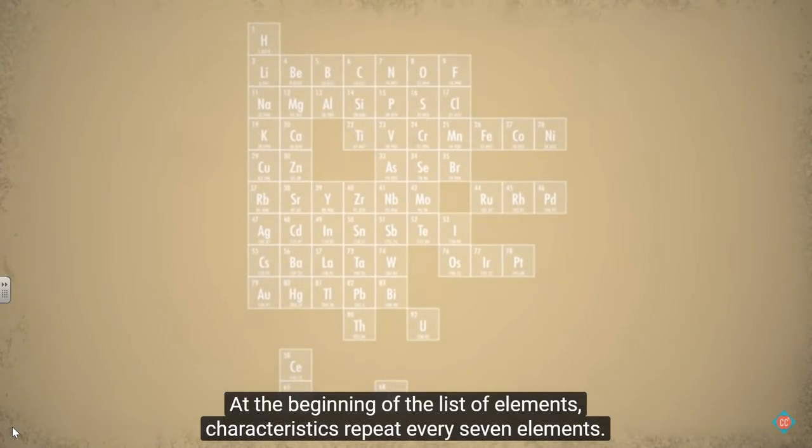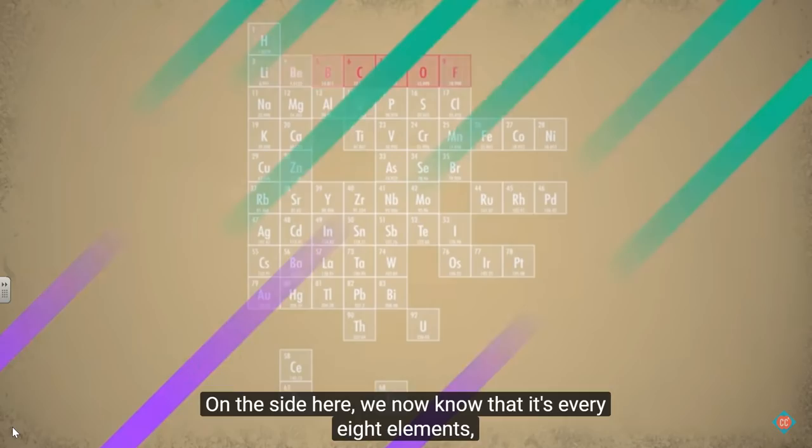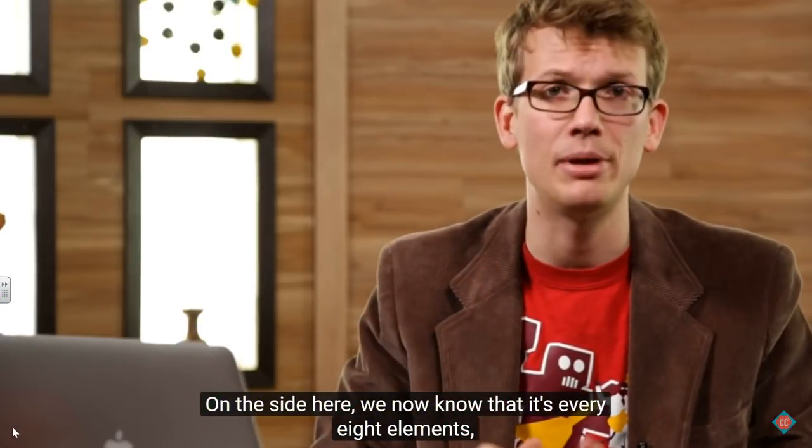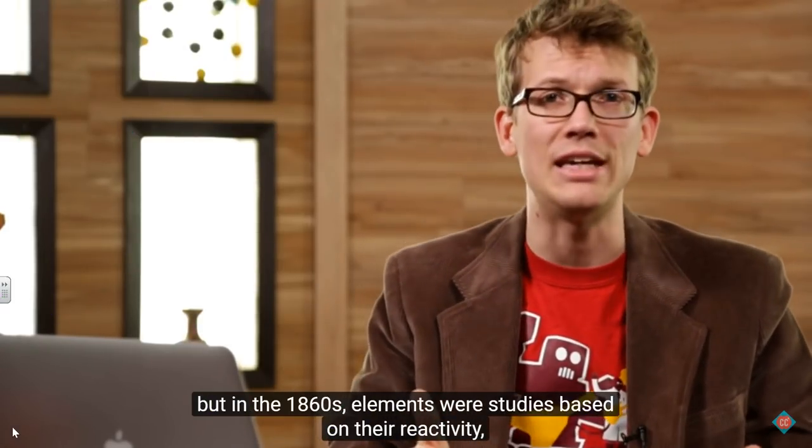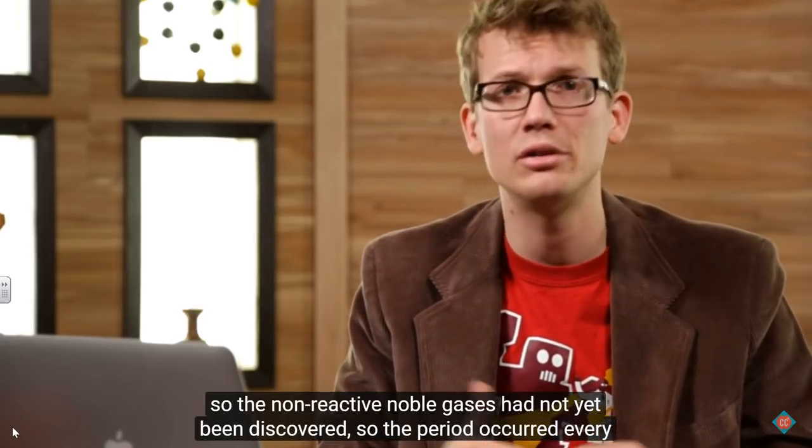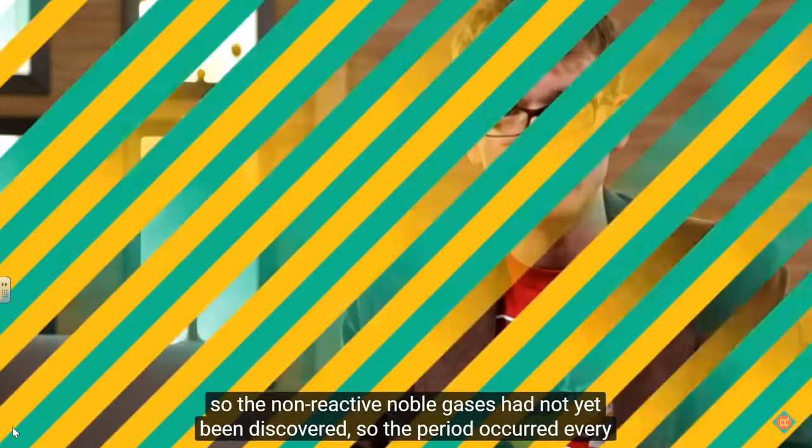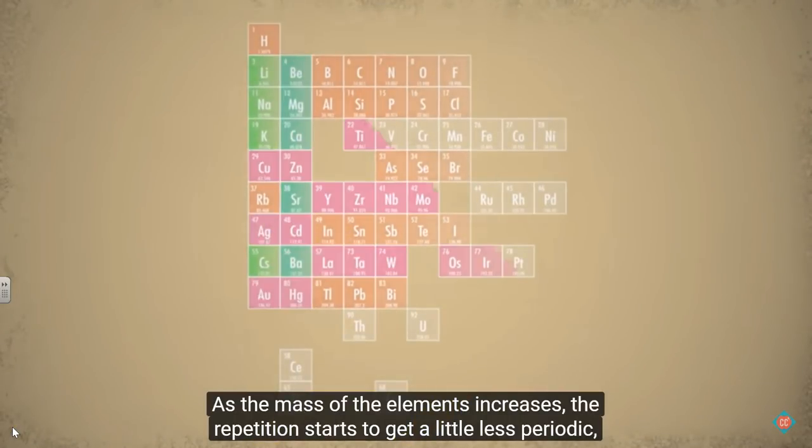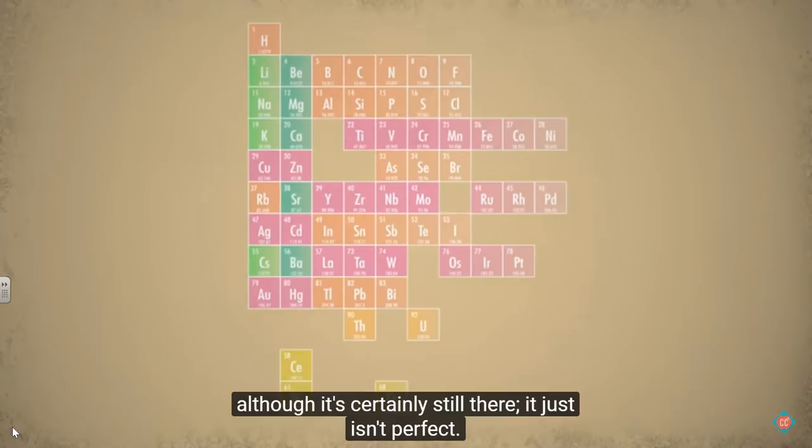At the beginning of the list of elements, characteristics repeat every seven elements. On the side here, we now know that it's every eight elements, but in the 1860s, elements were studied based on their reactivity. So the non-reactive noble gases had not yet been discovered, so the period occurred every seven elements. As the mass of the elements increases, the repetition starts to look a little less periodic, though it's certainly still there. It just isn't perfect.